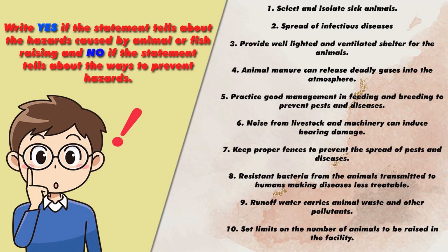Write Yes if the statement tells about the hazards caused by animal or fish raising, and No if the statement tells about the ways to prevent hazards. One: Select and isolate sick animals. Two: Spread of infectious diseases. Three: Provide well-lighted and ventilated shelter for the animals. Four: Animal manure can release deadly gases into the atmosphere. Five: Practice good management in feeding and breeding to prevent pests and diseases. Six: Noise from livestock and machinery can induce hearing damage. Seven: Keep proper fences to prevent the spread of pests and diseases. Eight: Resistant bacteria from animals transmitted to humans, making diseases less treatable. Nine: Runoff water carries animal waste and other pollutants. Ten: Set limits on the number of animals to be raised in the facility.